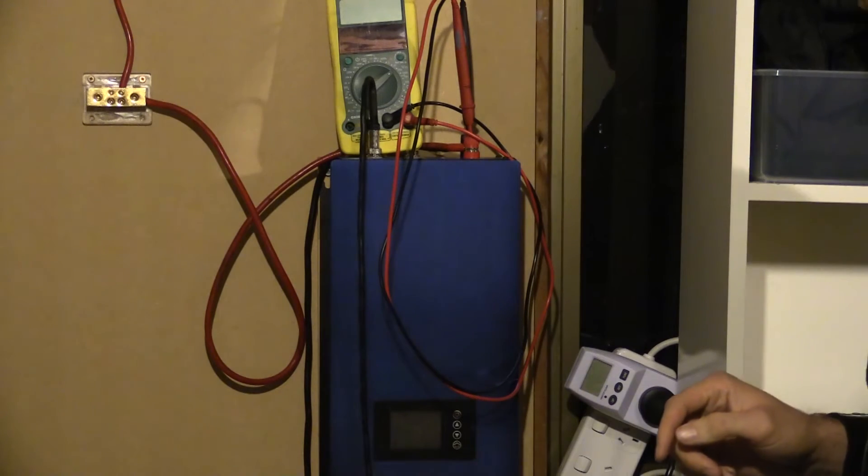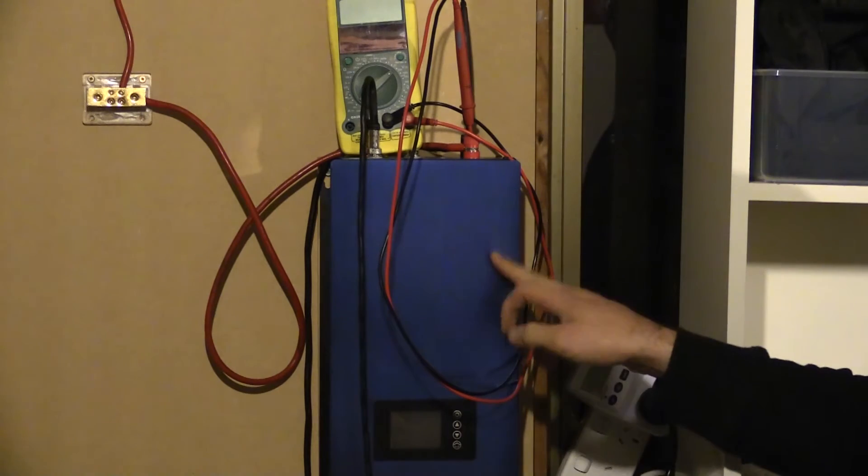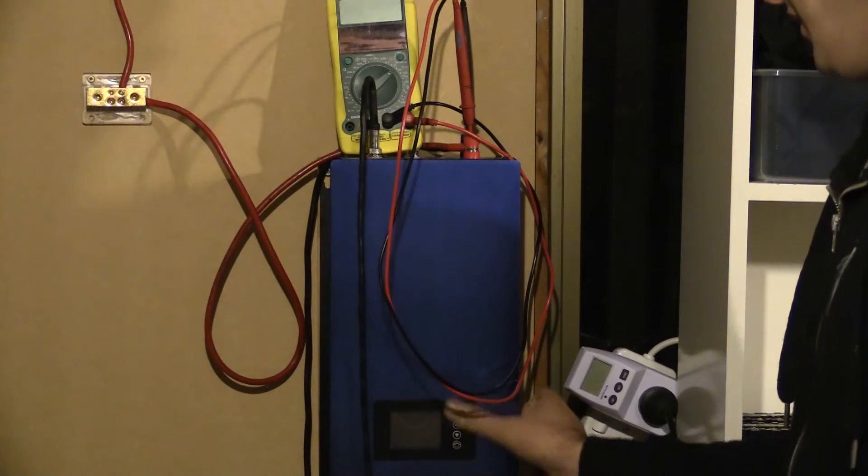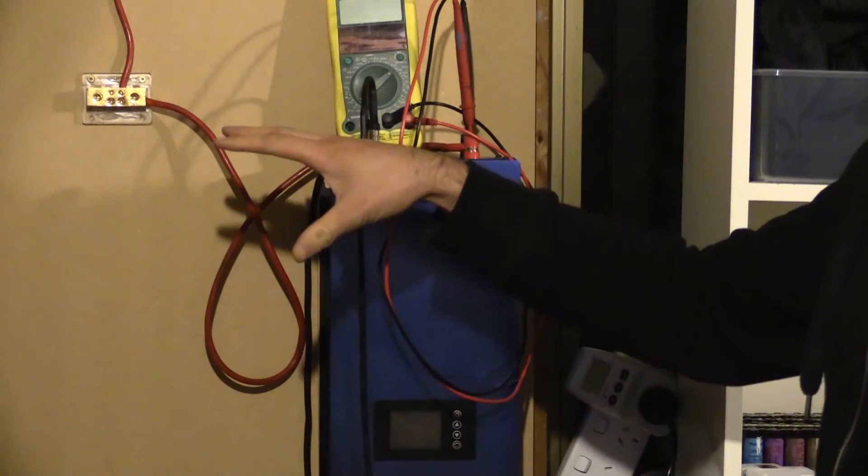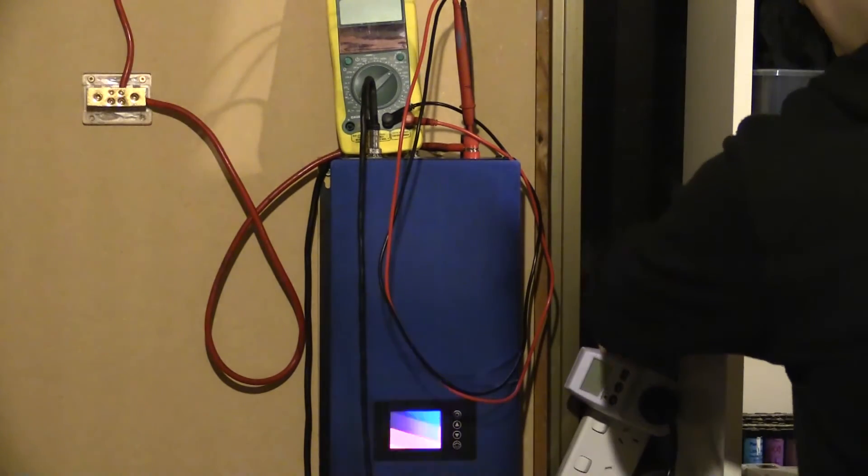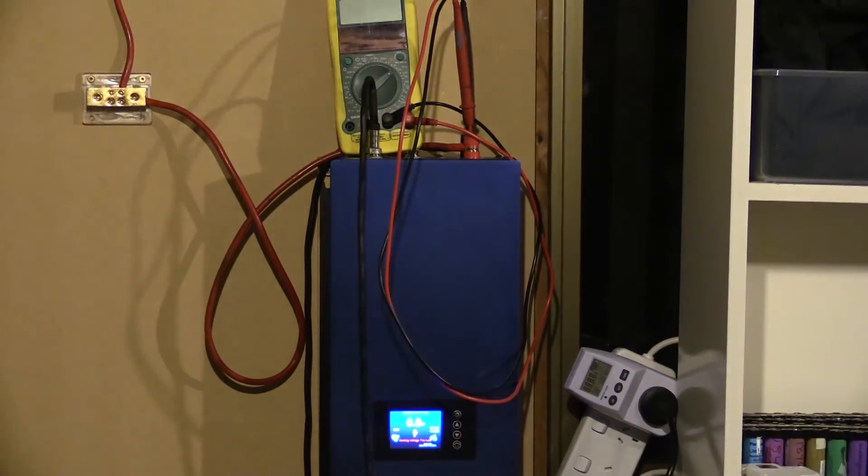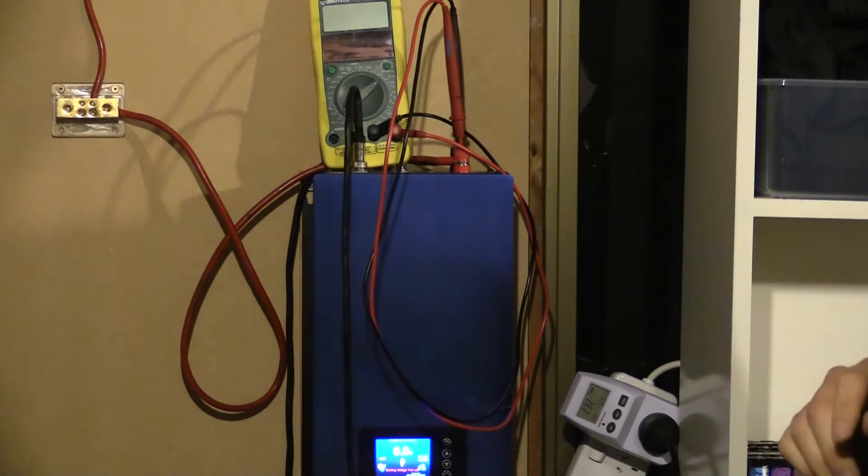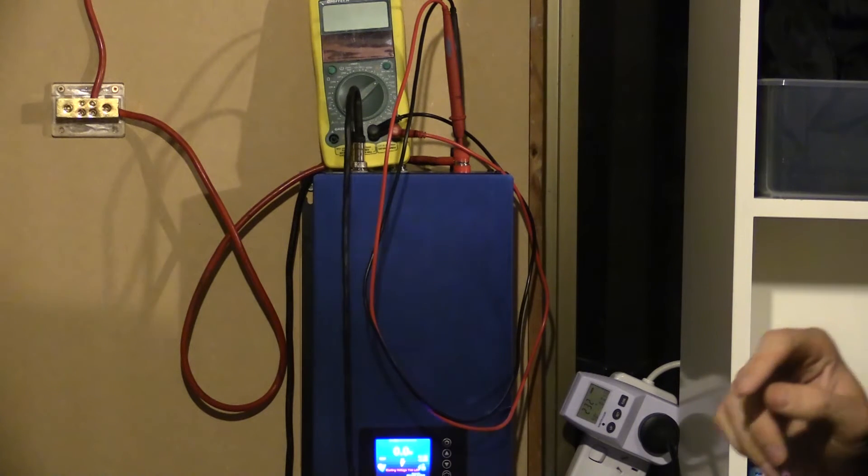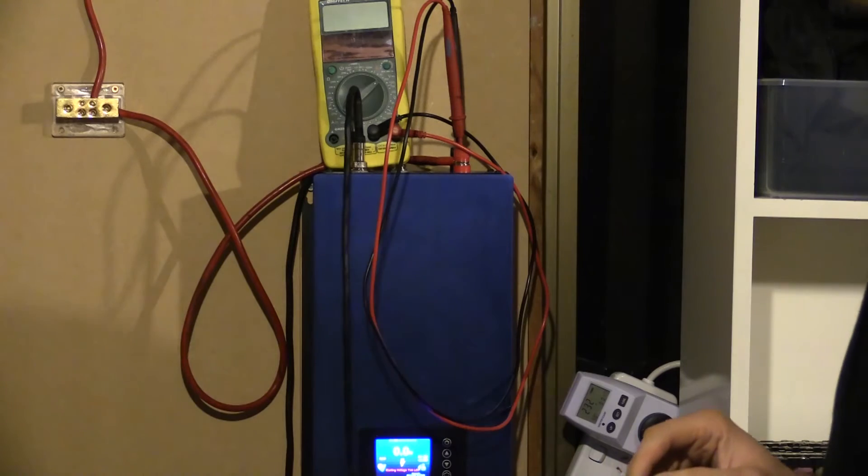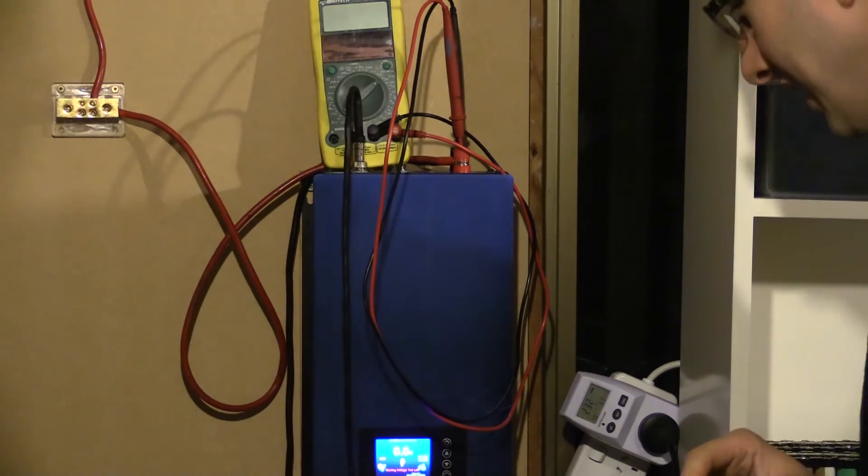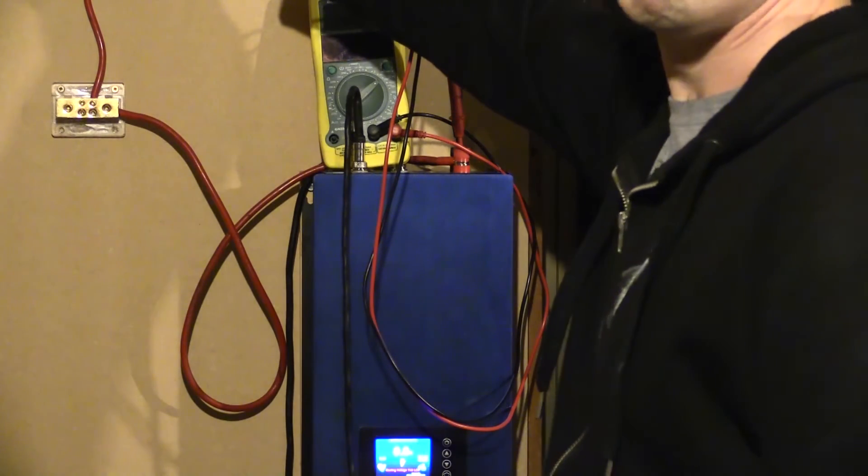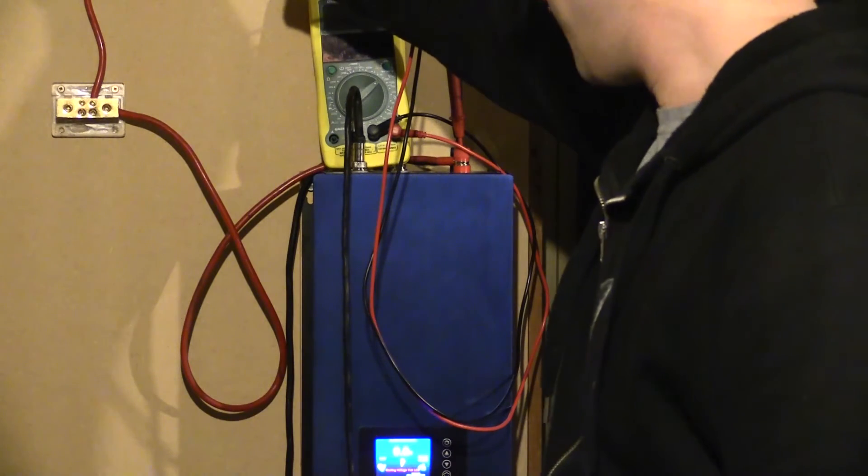So what we'll do first is let's turn the AC on to the grid tie inverter and let's double check that we've set the limiter on before we even turn the DC on. I'll just quickly check. Right, moment of truth. What we'll do now is turn our batteries on. Let's see what happens. It should do nothing.